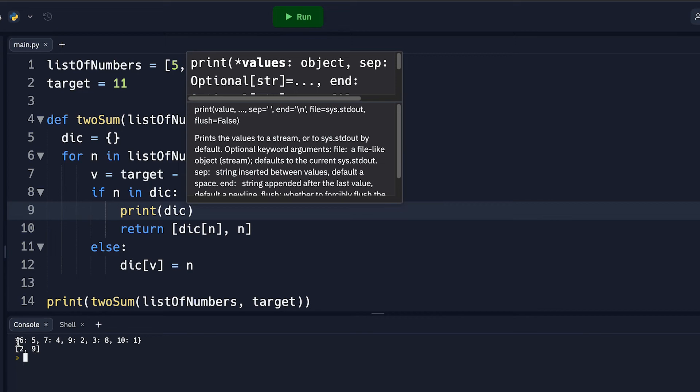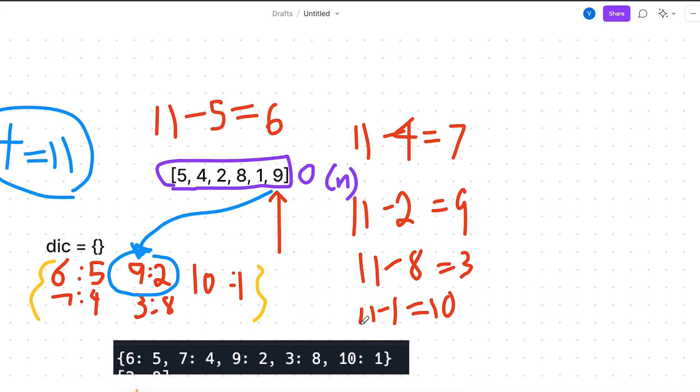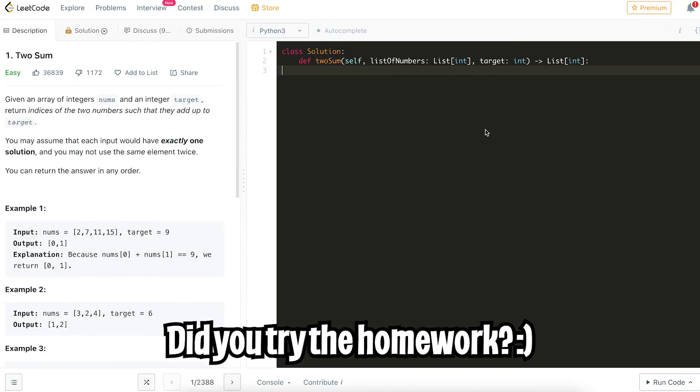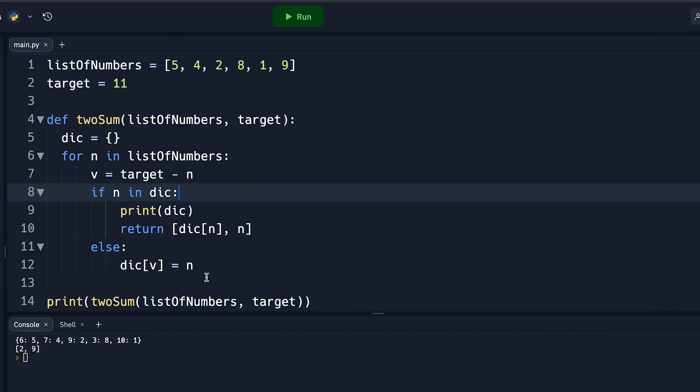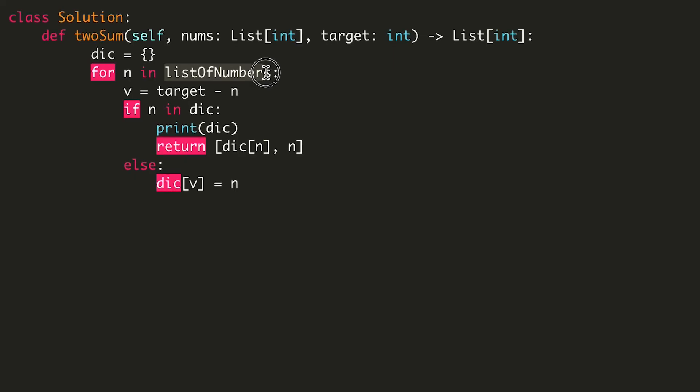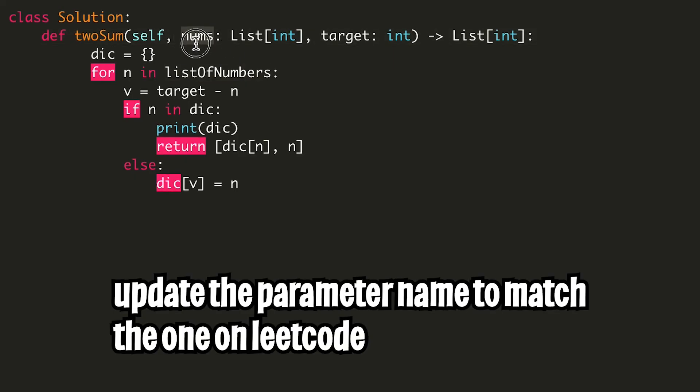So just to give you guys an idea of what the dictionary looks like, let's add a print statement here and let's print out the dictionary. So let's click run. And here, as you can see, we got this dictionary, which basically matches up with this drawing that we have here. Cool. So for those of you that didn't solve the two sum question on LeetCode, we can basically just use the solution.